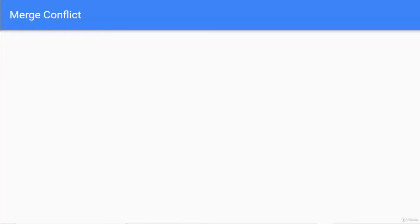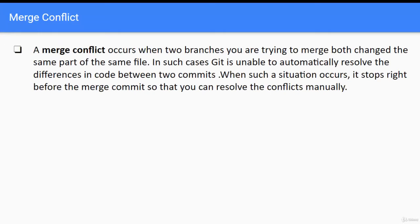In this lesson, we are going to learn what is merge conflict and how to resolve conflicts in case of merge and rebase. A merge conflict occurs when two branches you are trying to merge both change the same part of the same file. In such cases, git is unable to automatically resolve the differences in code between two commits. When such a situation occurs, it stops right before the merge commit so that you can resolve the conflicts manually.